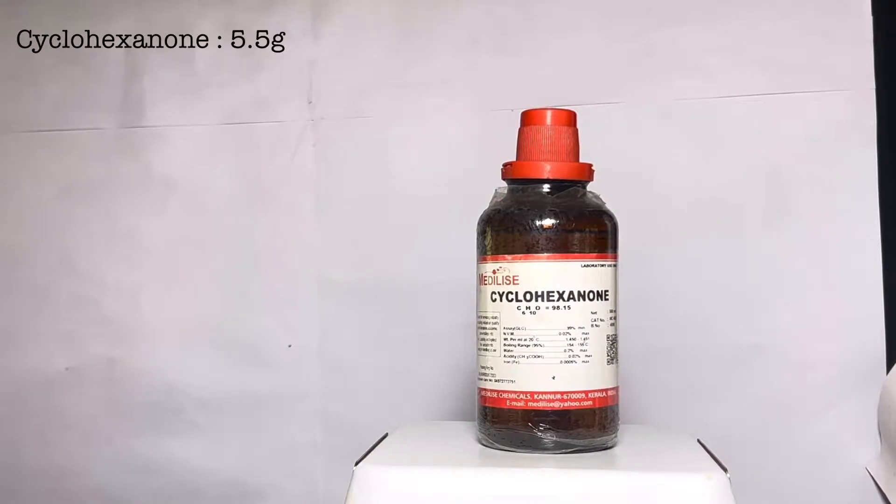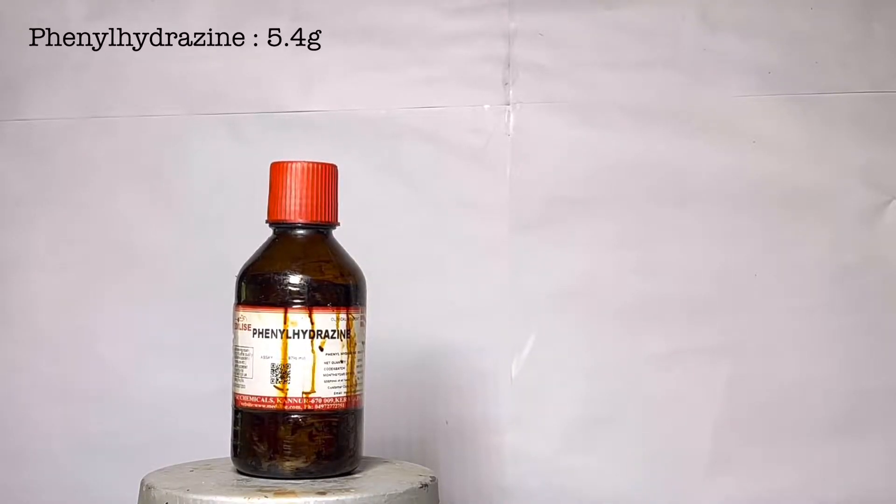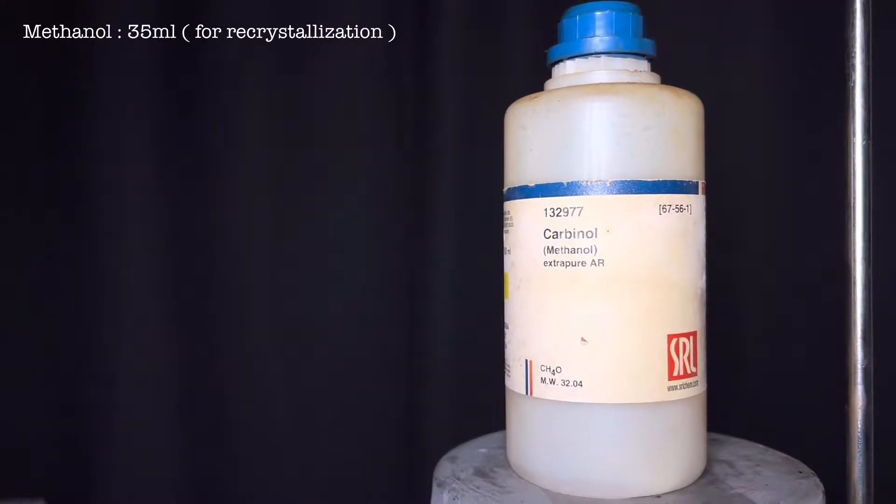For this experiment you will need 5.5 grams of cyclohexanone, 18 grams of glacial acetic acid, 5.4 grams of phenylhydrazine, and 35 ml of methanol for recrystallization.